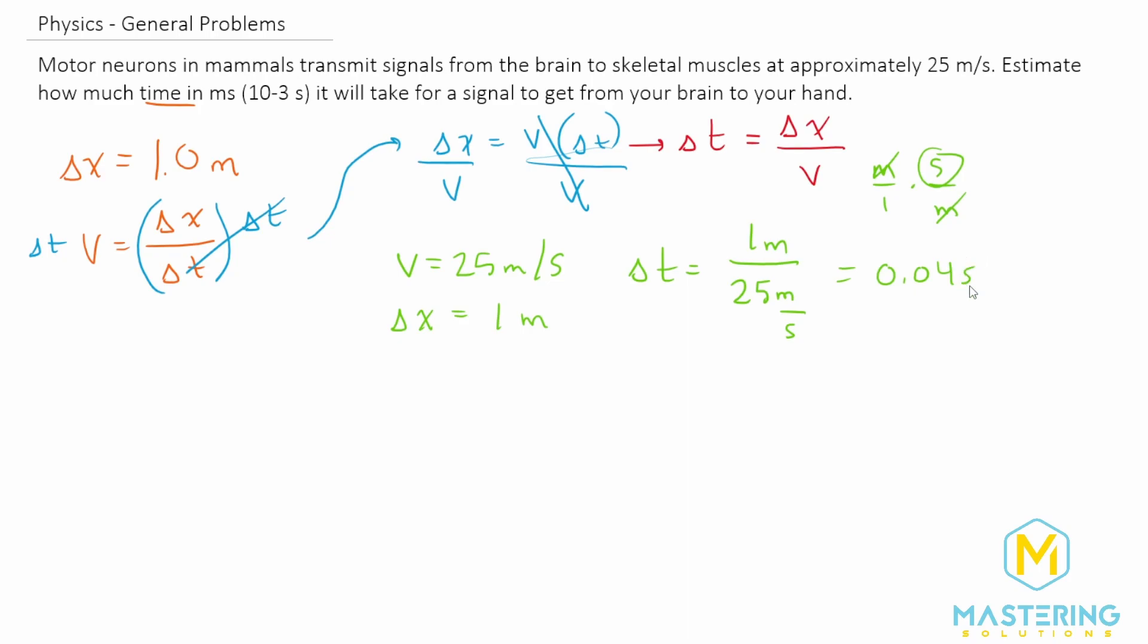Since this is in seconds, we want to put it in milliseconds the way the question asks. To do that we'll move the decimal place over three, so 1, 2, 3. That gives us 40 milliseconds, or written a different way, 40 times 10 to the -3 seconds, but 40 milliseconds is the answer.